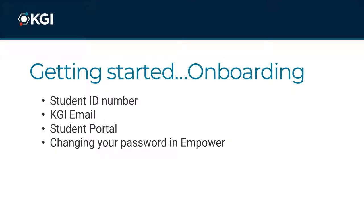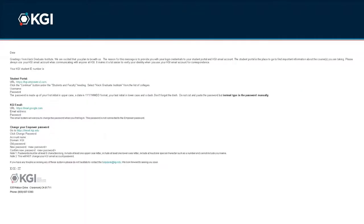You have received an email from the Information Technology team with key information to facilitate your student experience, including your student ID number, your KGI email address, an introduction to the student portal, and how to change your password in Empower, the KGI student information system. The email will have direct links to the student portal and Gmail in which you can complete the necessary actions.